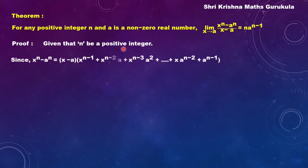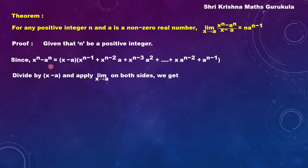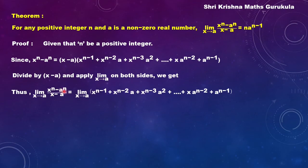Now, n is a positive integer. We have x to the power n minus a to the power n equal to x minus a into the sum: x to the power n minus 1 plus x to the power n minus 2 into a plus x to the power n minus 3 into a squared, and so on. Dividing throughout by x minus a and taking the limit as x tends to a on both sides, the limit of x to the power n minus a to the power n by x minus a as x tends to a equals the limit of that polynomial sum as x tends to a.